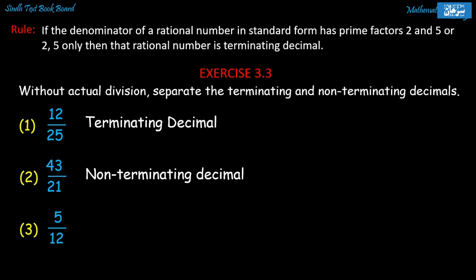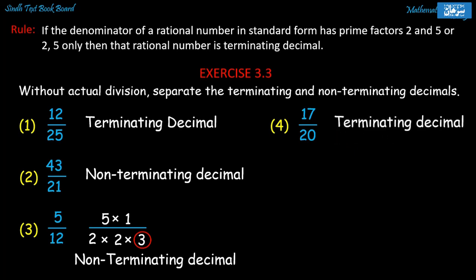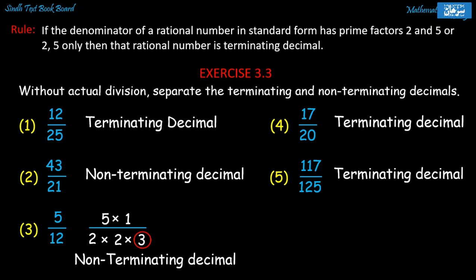Problem number 3: 5 upon 12. In the prime factors of the denominator 12, we find 3, and there is no other matching pair, so it is a non-terminating decimal. Problem number 4: 17 upon 20. The prime factors of the denominator 20 are 2 × 2 × 5. Due to prime factors 2 and 5 only, it is a terminating decimal. Problem number 5: the prime factors of the denominator are 5 only, so it is a terminating decimal.